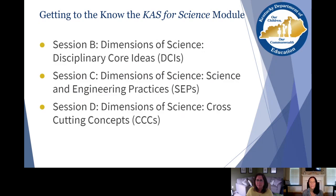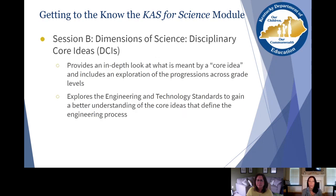Now let's take a closer look at the Getting to Know the CAST for Science module. These are sections we'd like to highlight because if you're familiar with the science standards, you know there are three dimensions that make up each standard. Session B takes a closer look at the disciplinary core ideas, session C focuses on the science and engineering practices, and session D takes a closer look at the cross-cutting concepts. It's really important to understand each of these dimensions in depth and how they are interwoven together to build science understanding for students.